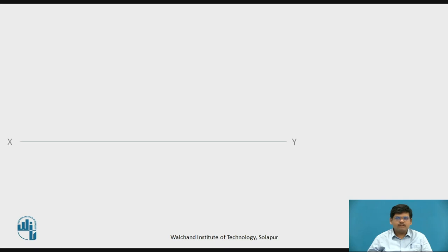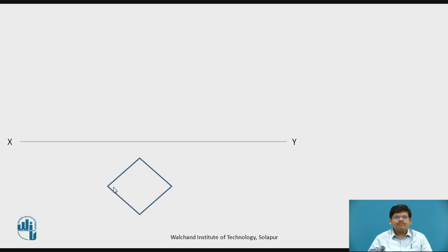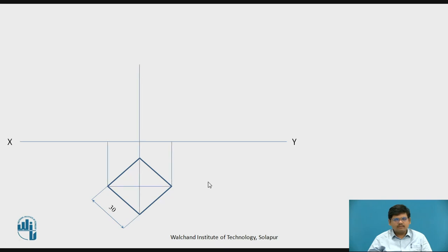Now let us move to the actual drawing. This is your XY line — the upper side is the vertical plane and the lower side is the horizontal plane. In the top view, the sides are equally inclined to VP; each side is inclined to the vertical plane at an angle of 45 degrees. We will project for the top view. This is the top and front view of the given solid.